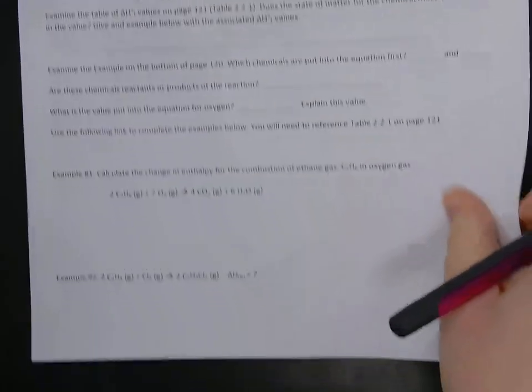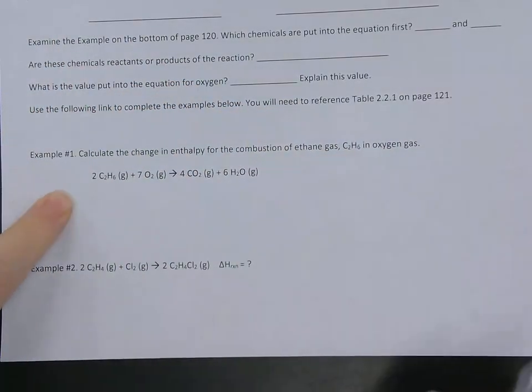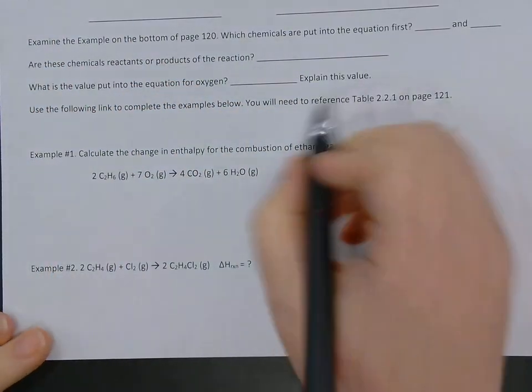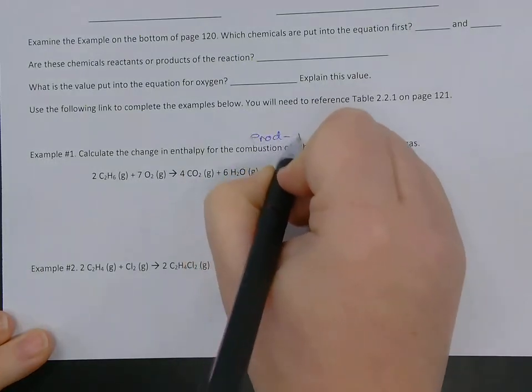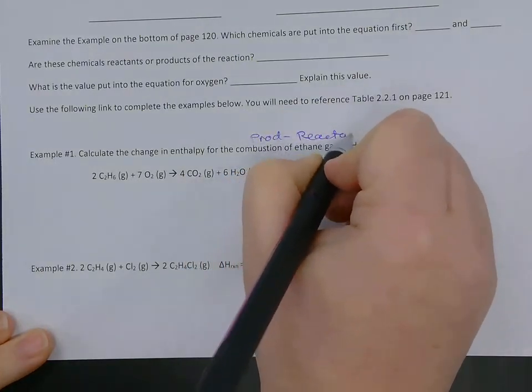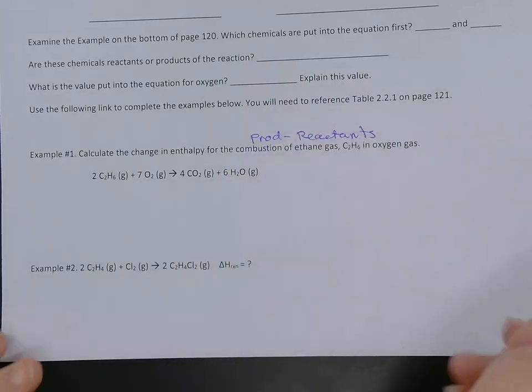So down at the bottom, we've got these two reactions. So we're going to start with the first one. And again, we're going to do products minus reactants. So keep that in mind, and we're going to multiply by our coefficients.